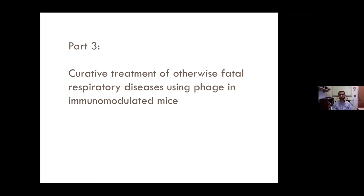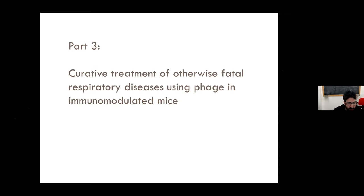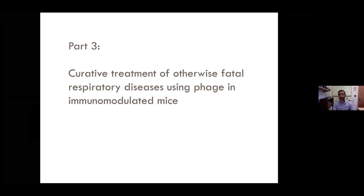Even in treatment of CF patients, as Paul Turner is doing, there are complex communities, but there tends to be a disproportionate impact of Pseudomonas aeruginosa, so there can still be significant benefits. A question from the audience: with the synergistic involvement of phage and the immune system being more effective, how will bacteria elimination work in immunodeficient or immunocompromised patients? That is a great question—and looking at the title of this slide, that's exactly what I'm going to talk about.